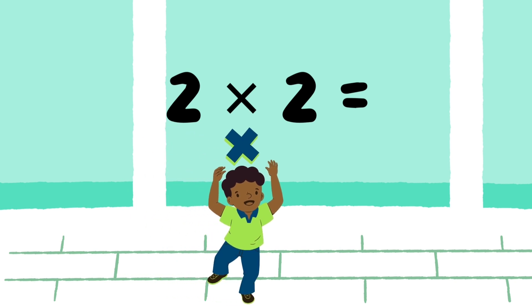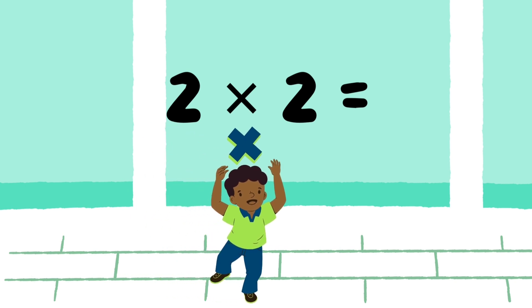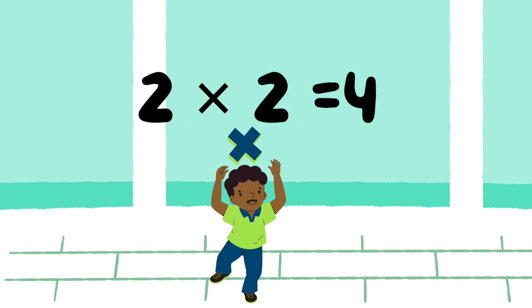Let's guess the symbol and solve the numbers. 2 multiply 2. Number 4.